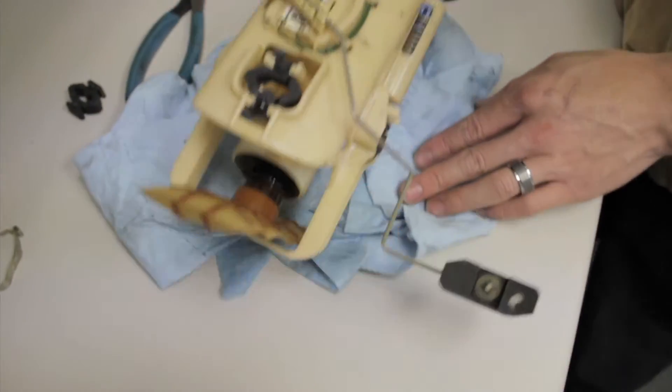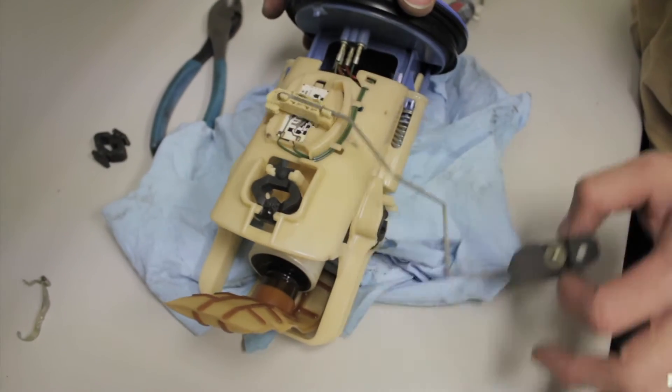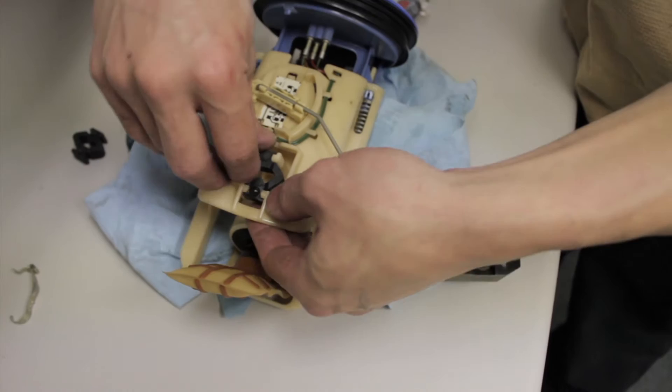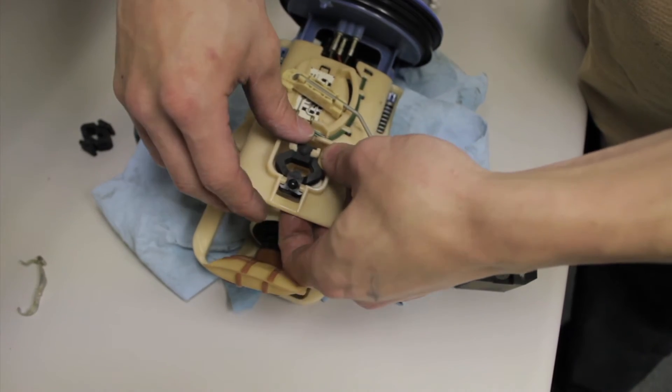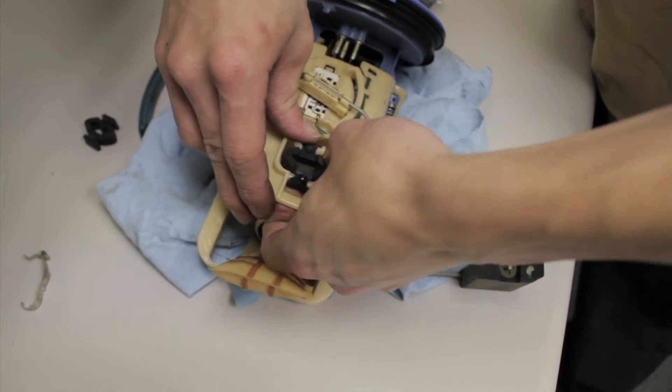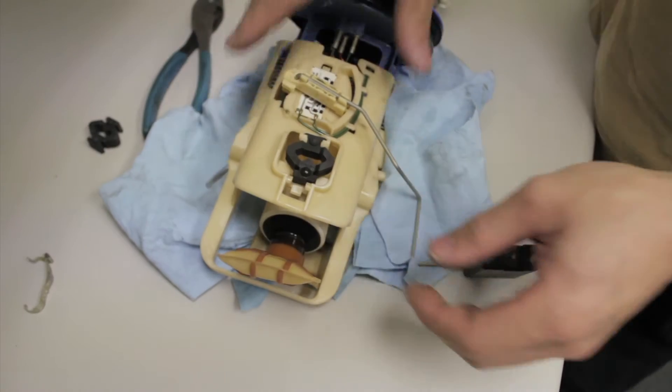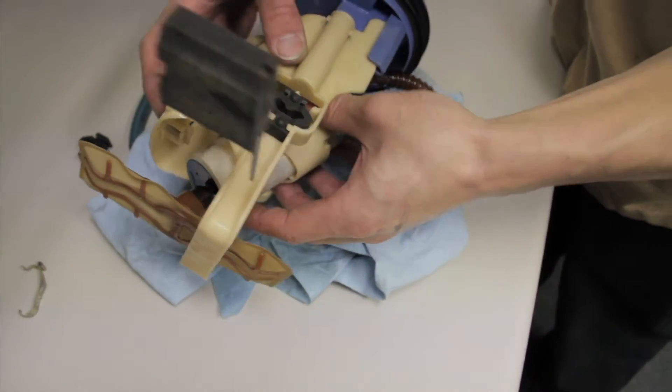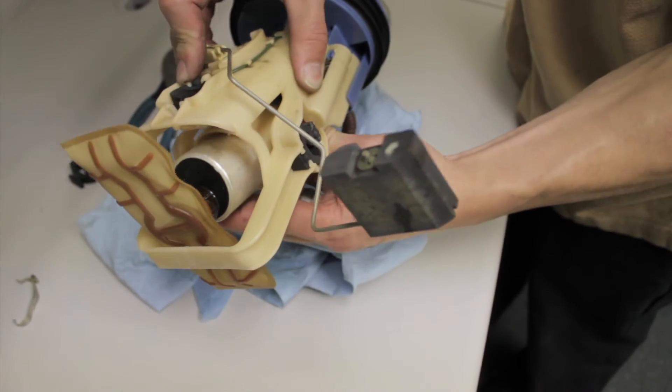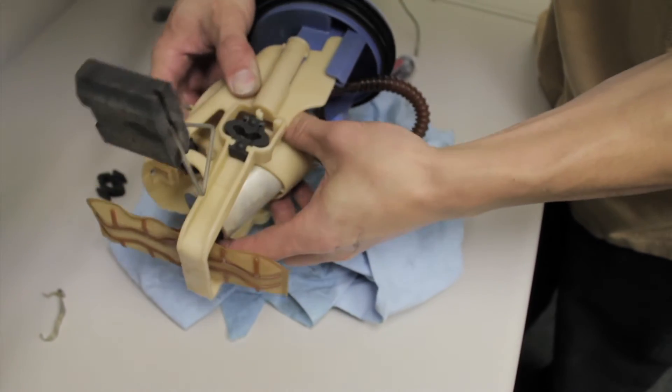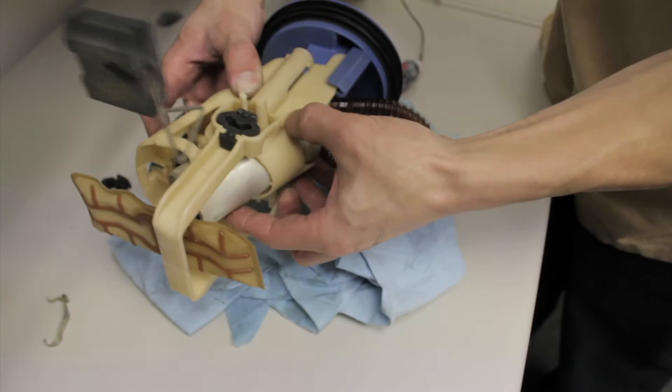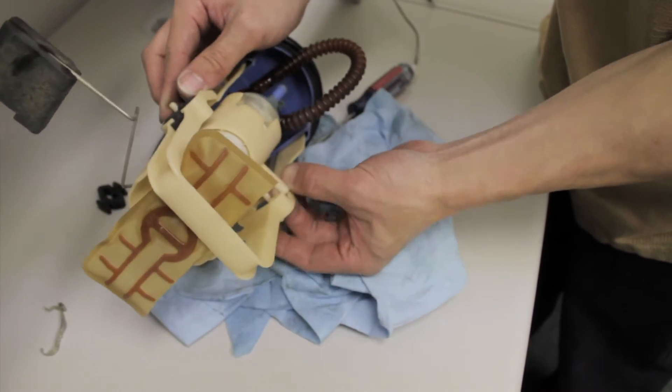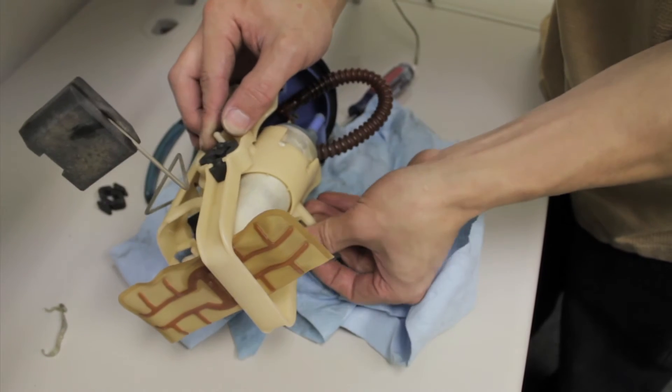And then the last one on the back. You want to be very careful because the back of it is the side with the actual sending unit on it, so you don't want to interfere with that too much. So now with that released, I'll go ahead and gently work the pump out of the hanger.